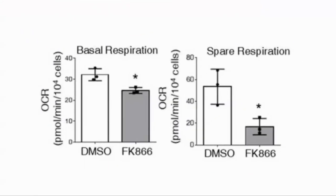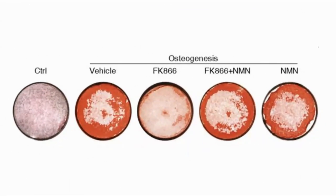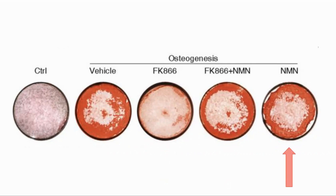They then looked at how respiration was impacted by FK866, where respiration in the cell is part of the Oxphos process. They saw that both the basal and the spare respiration were reduced, where the spare respiration is the difference between the basal and the maximum. They suspected this lower respiration was caused by Oxphos not being able to work without NAD. So they looked at whether supplementing with NMN would increase the NAD and rescue the bone regeneration. FK866 reduced the bone formation as expected, and adding NMN partly reversed it. However, NMN on its own did not impact the result.